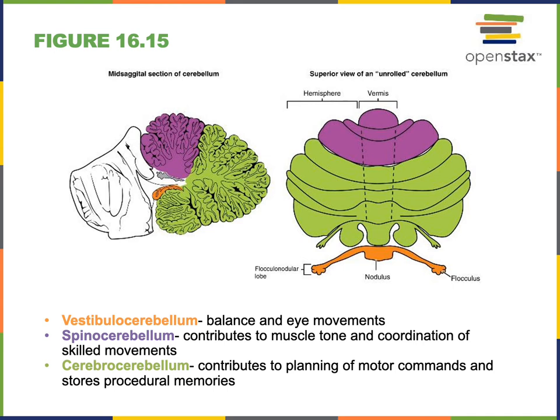This information is important for coordinating balance and eye movements. The spinocerebellum receives sensory information from the spinal cord, from proprioceptors like the Ruffini corpuscles found in joint capsules, monitoring the position of the body. This sensory information is important for the cerebellum to send out involuntary commands to help maintain posture and coordinate complex movements of the body.